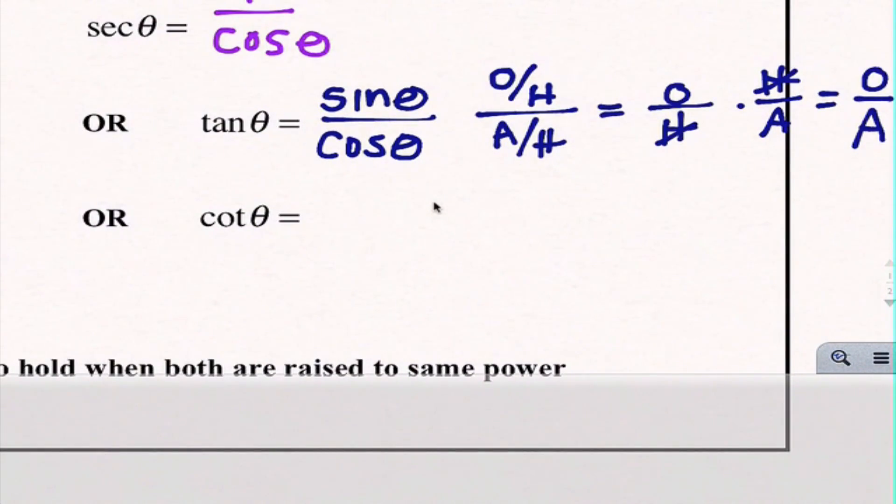Cotangent, same exact idea. We know cotangent is the reciprocal of tangent, so instead of sine over cosine it is cosine theta over sine theta.